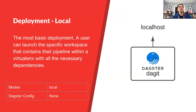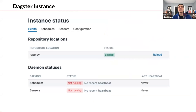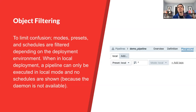Our local deployment is very much just running Dagster against a specific repo. At this point, the only modes available are local, and the Dagster configuration is none because there are no additional dependencies. For object filtering, you just have access to local mode and presets, and you don't have any schedules available.